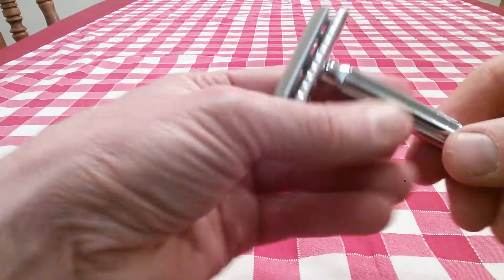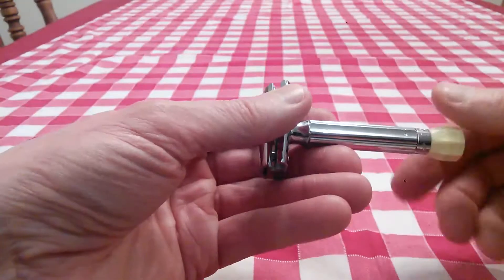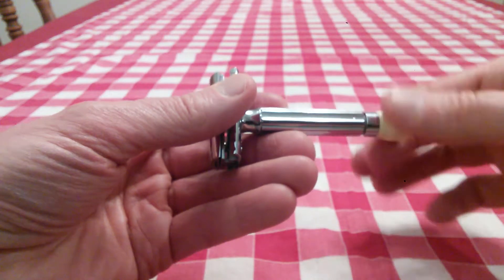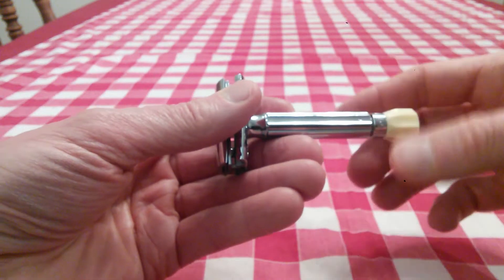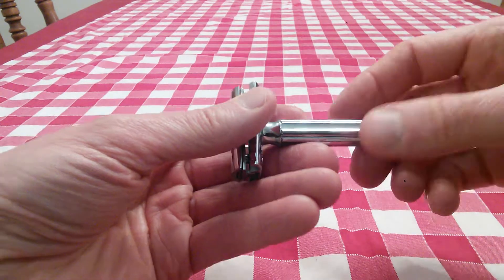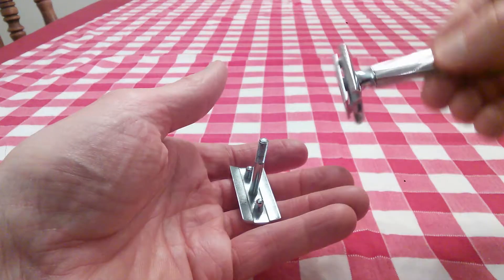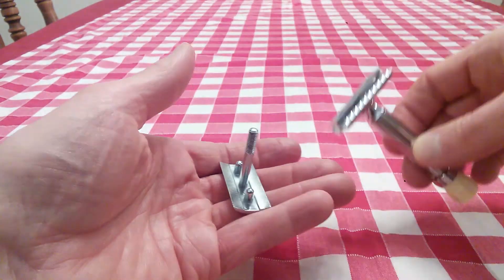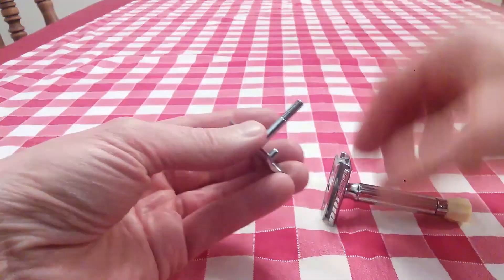Now the Merkur Progress is a two-piece safety razor. You open it up by turning the bottom knob here counterclockwise. And the head comes off of the body of this thing.